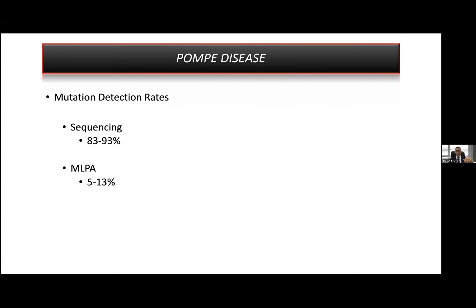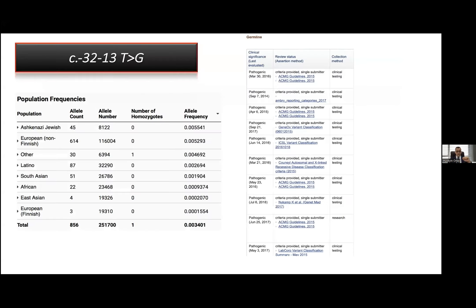We use sequencing and MLPA in the diagnosis of Pompe. Sequencing can diagnose nearly 90% of all cases, and in the remaining 10%, we may detect mutations with MLPA. We have a specific exonic deletion that is highly important in Pompe disease — in nearly 5% of cases we see this specific exonic deletion. The most common Pompe mutation can cause juvenile onset or late onset Pompe disease.